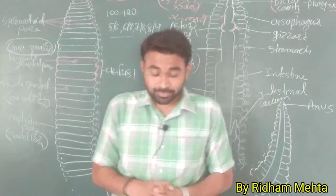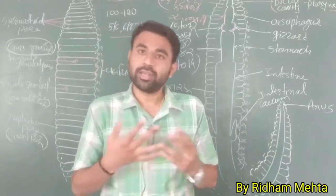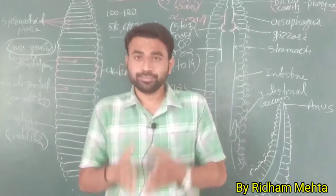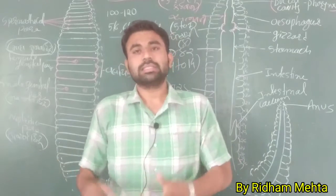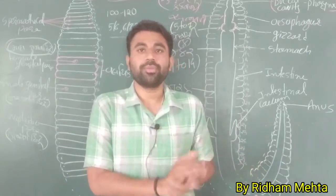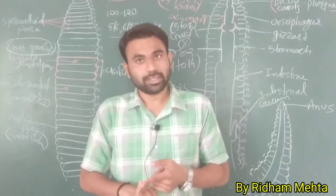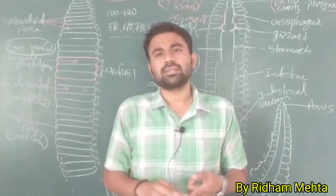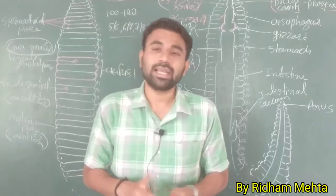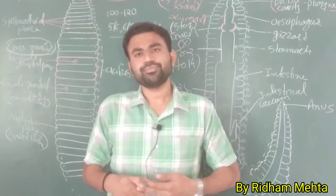In the previous lecture we completed the nerve tissue and muscle tissue. Now we move towards three different animals: annelids (earthworm), cockroach (arthropoda), and frog (amphibia). We will study their external characters, morphology, and the different systems of their body like digestive system, reproductive system, nervous system, excretory system, and vascular system.